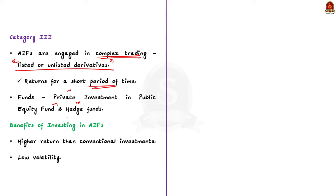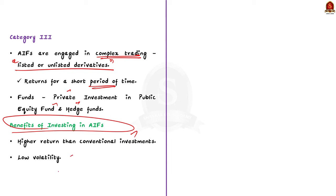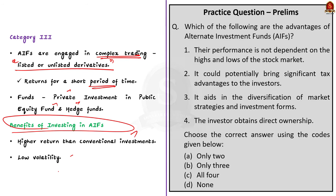These are all the various categories of the alternate investment funds. Talking about the benefits, AIF provides higher returns than any conventional investment, but they have volatility issues also. This is all about the basics of alternate investment funds. With these learned points, let us move on to the next news article for our discussion.